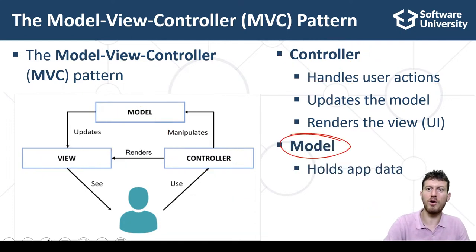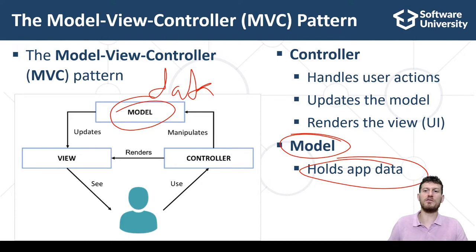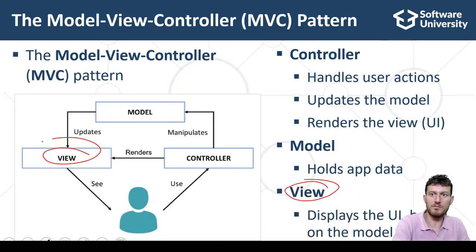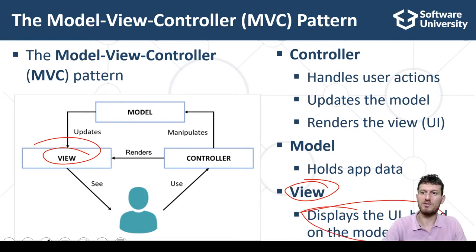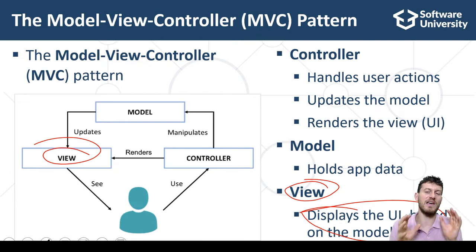Models hold the app data. Typically, the models are data classes which hold the data that should be displayed on the screen. For example, in our phonebook app, the data model used to visualize a phonebook entry is a data object holding the phonebook entry details. Views display the UI for a certain screen of the app based on the data from the model. For example, in our phonebook app, the view which displays the phonebook entries takes as input a data model holding a list of phonebook entries.